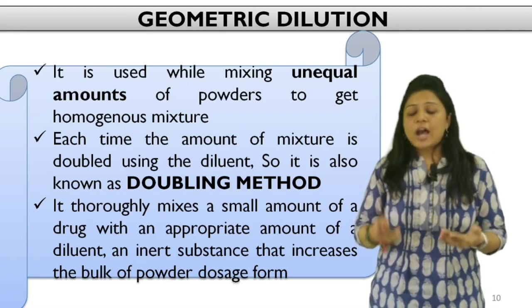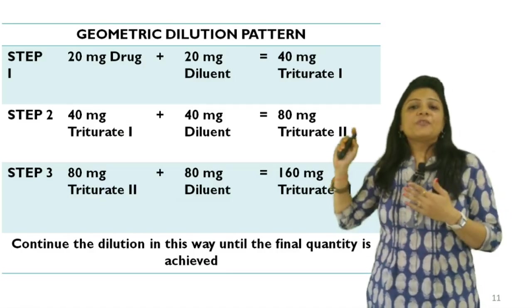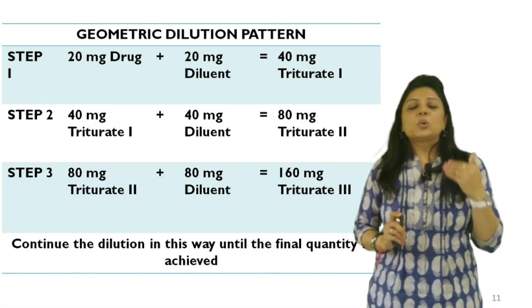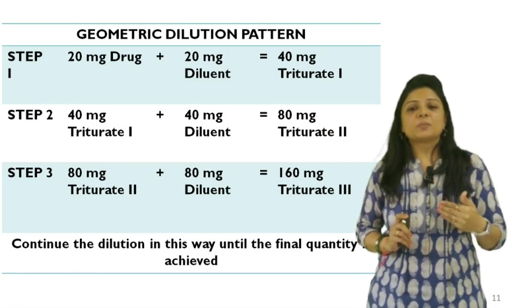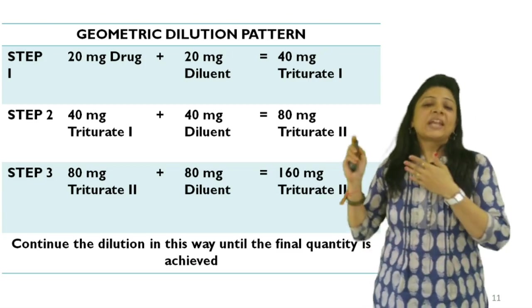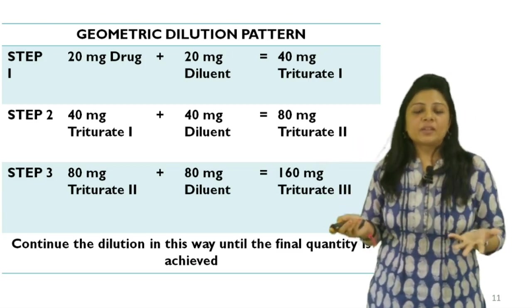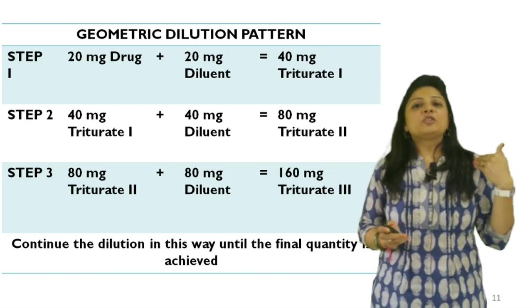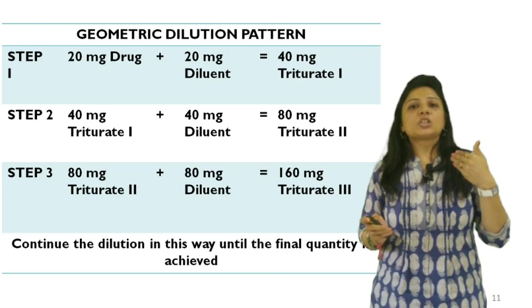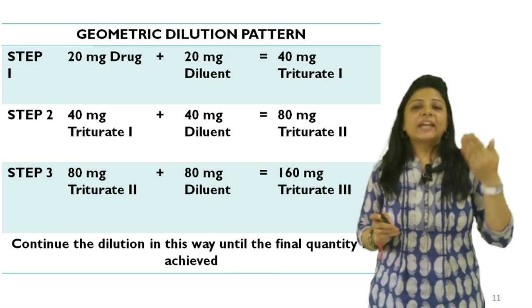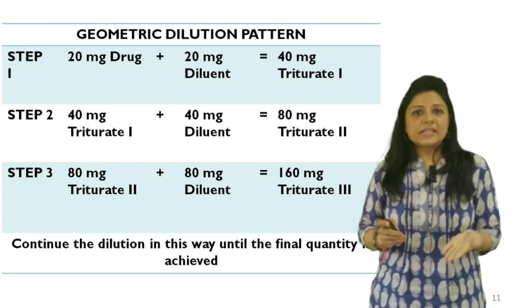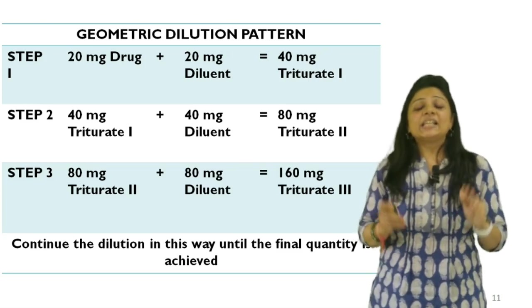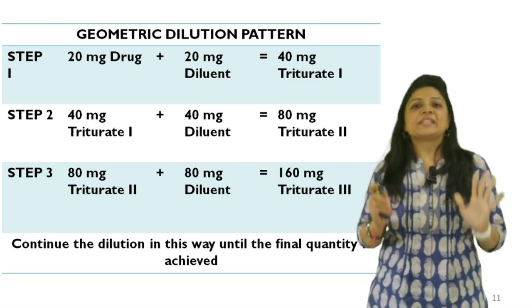How do you execute this method? In the first step, take the required quantity of drug and mix it with the same amount of diluent — mostly lactose is preferred — to get 40 milligram triturate. In the second step, double the quantity to get 80 milligrams. In the third step, it becomes 160 milligrams. In each step, keep doubling the quantity until you get the final dispensed quantity.